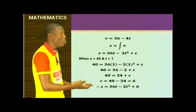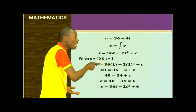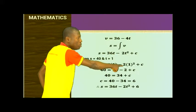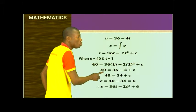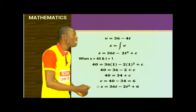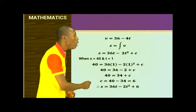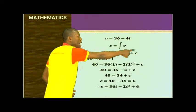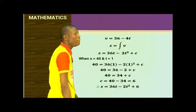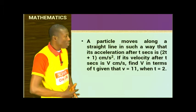Using the condition S equals 40 when T equals 1: 40 equals 36(1) minus 2(1)² plus C, so 40 equals 36 minus 2 plus C, giving 40 equals 34 plus C, therefore C equals 6. So the final displacement equation is S equals 36t minus 2t squared plus 6.